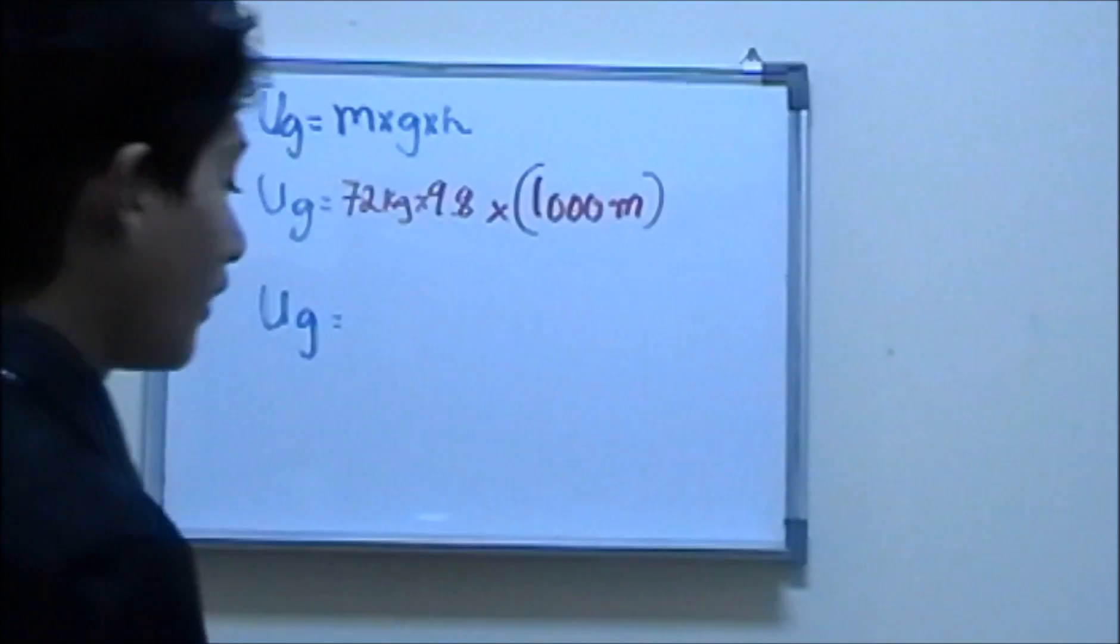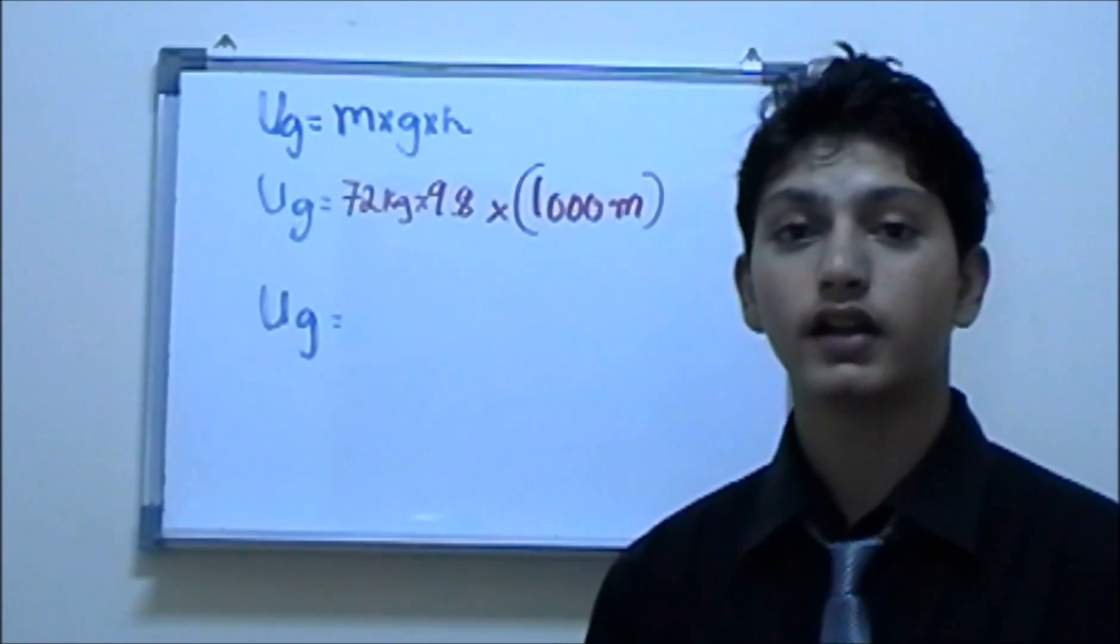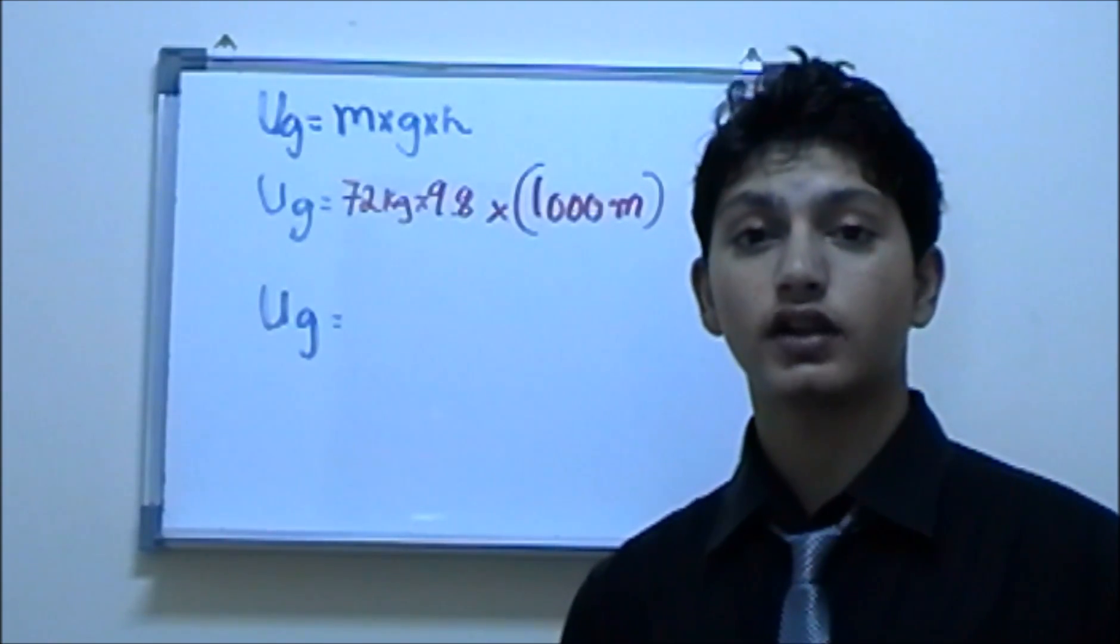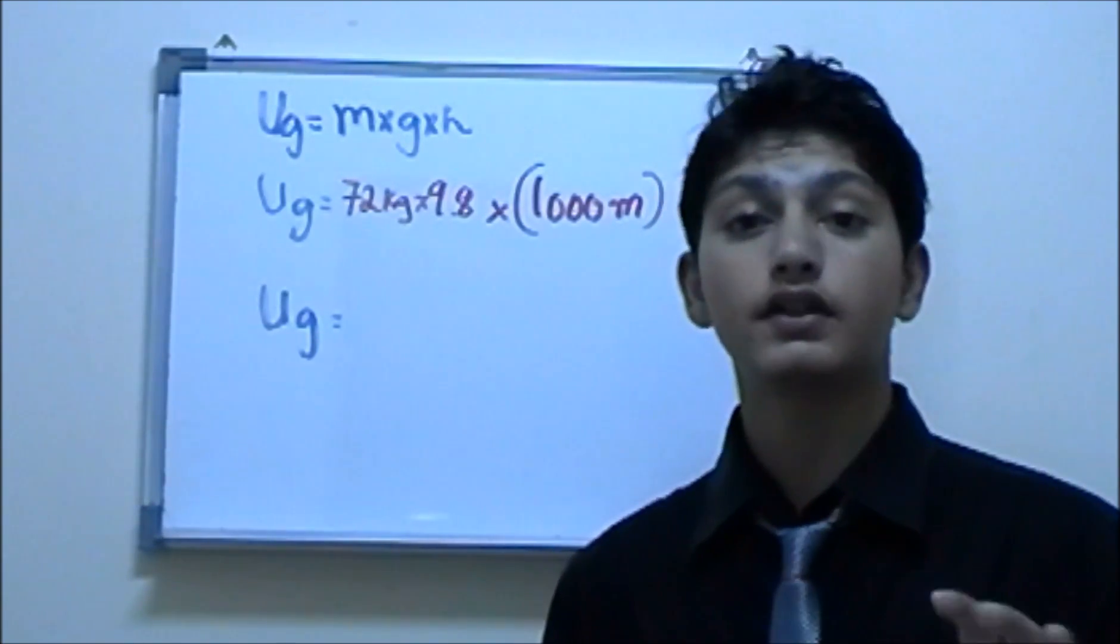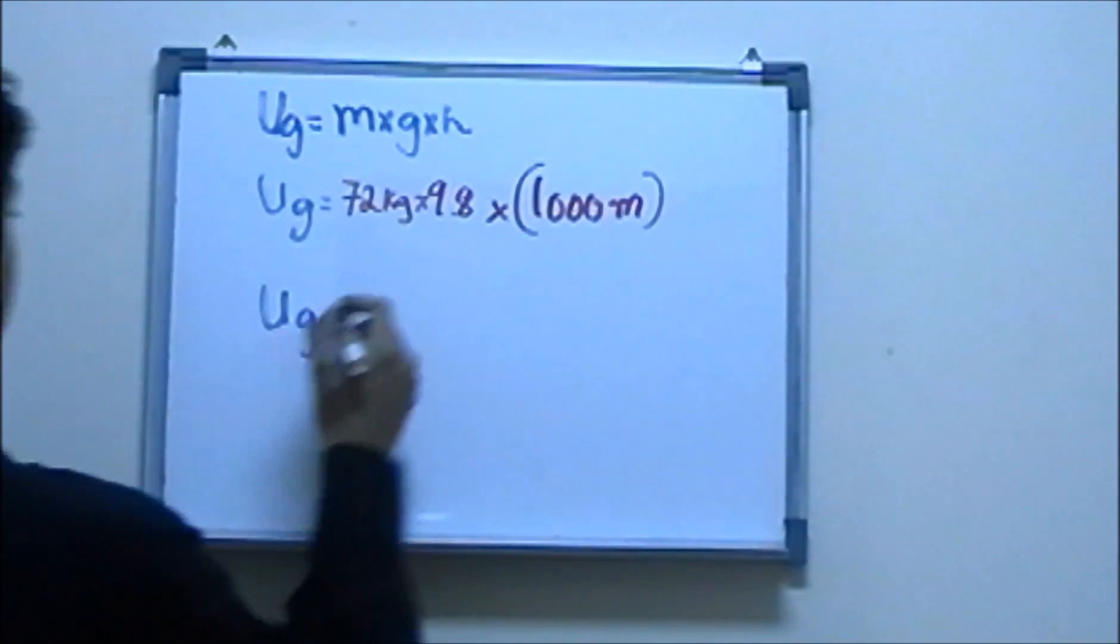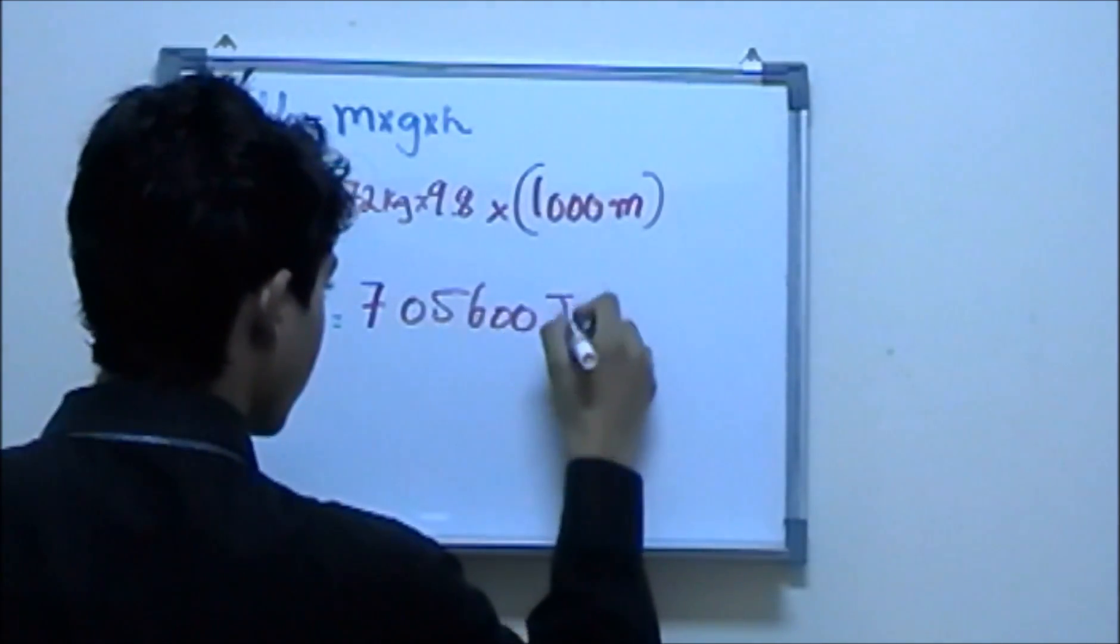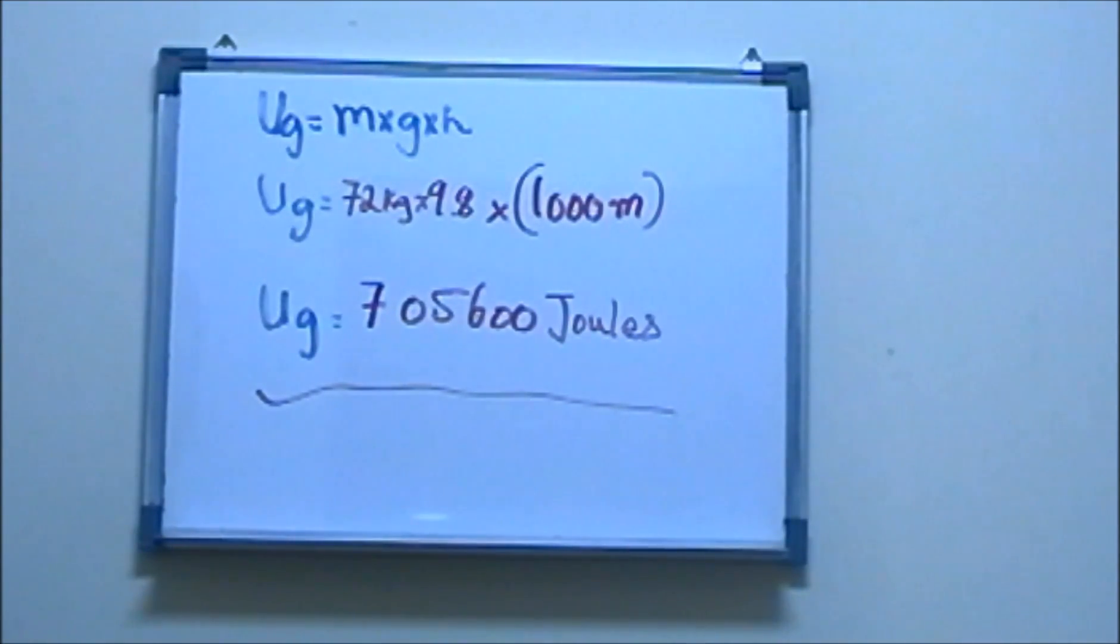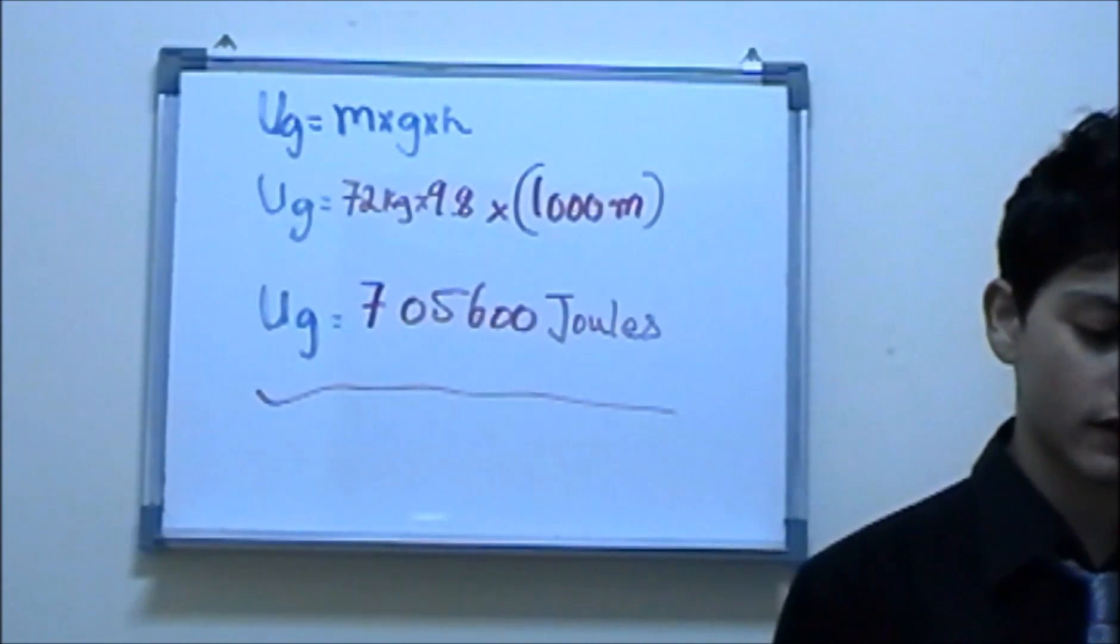If you were asked what's the gravitational potential of an object which is located on Mars or Jupiter, it's not 9.8. If the object is on the earth, it's 9.8. If you multiply this you should be getting 705,600 joules. So that is the gravitational potential energy of that boy who was lying on the concrete surface.